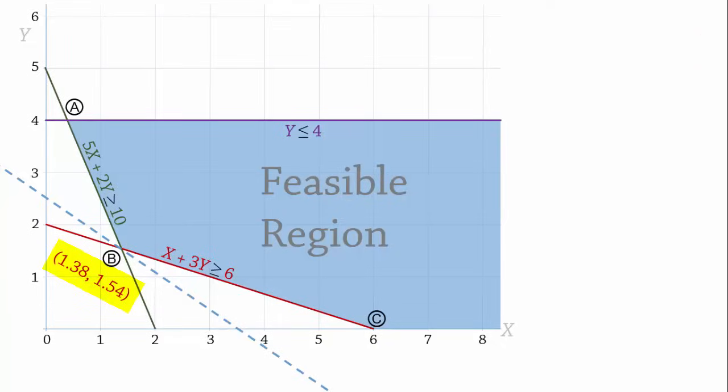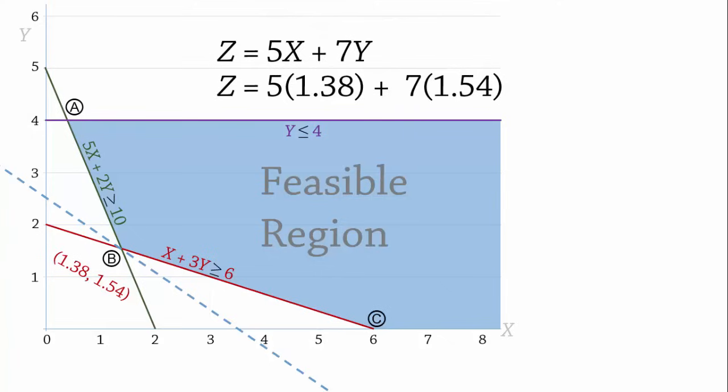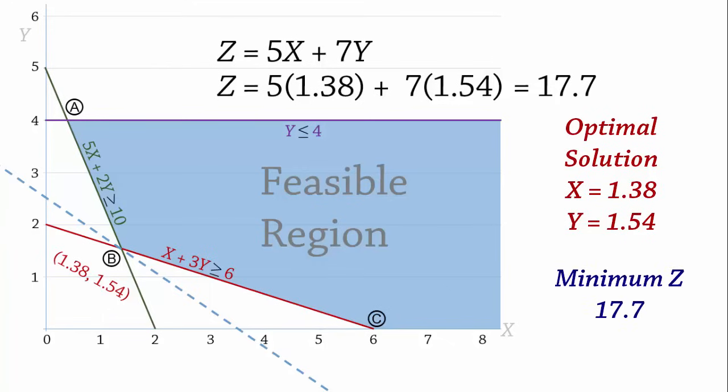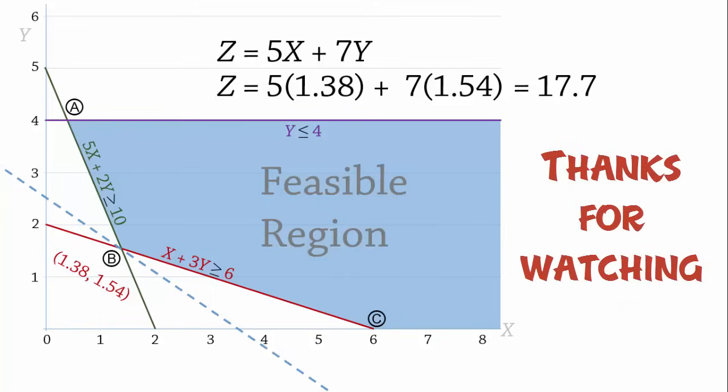Let's now plug the points into the objective function. We have 5 times 1.38 plus 7 times 1.54, which gives 17.7. So the optimal solution occurs at point B, and the corresponding minimum value of the objective function is 17.7. See you in the next video, and thanks for watching.